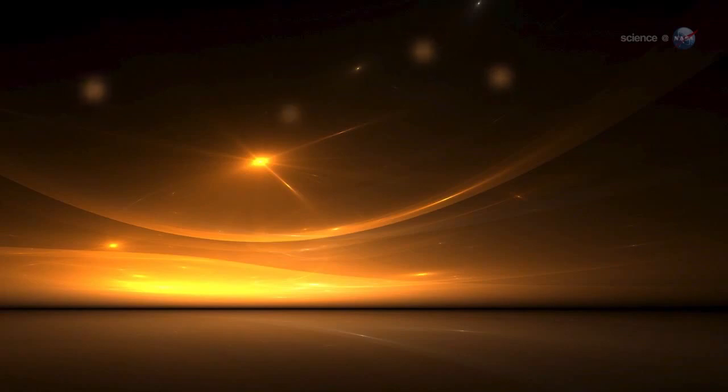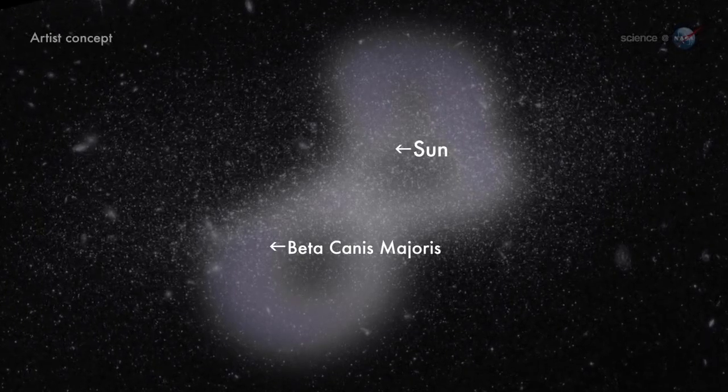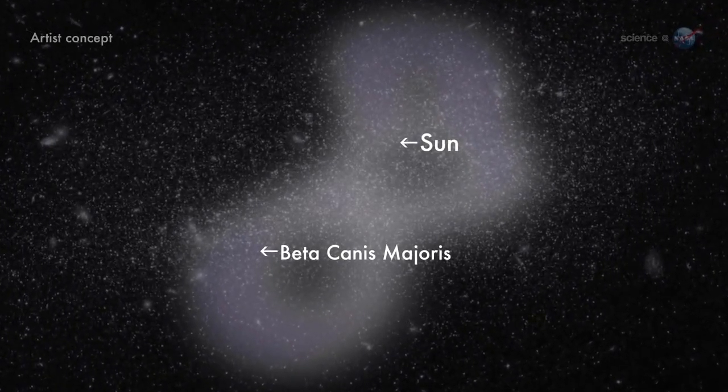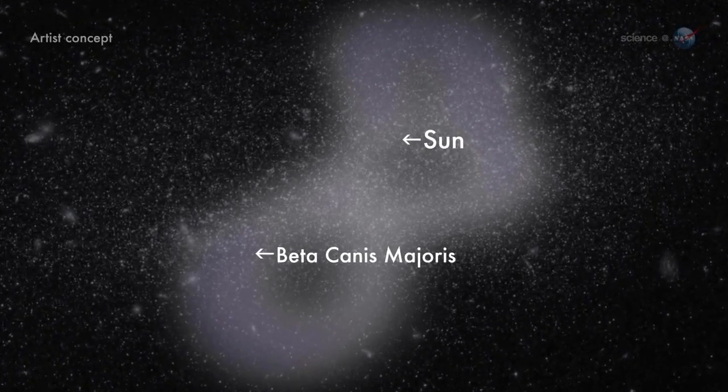We know, because the explosions blew an enormous bubble in the interstellar medium. And we're inside it. Astronomers call it the local bubble. It is peanut-shaped, about 300 light-years long, and filled with almost nothing.